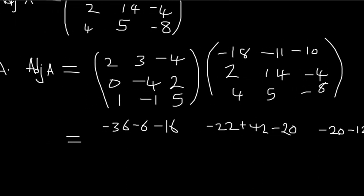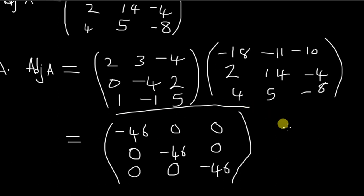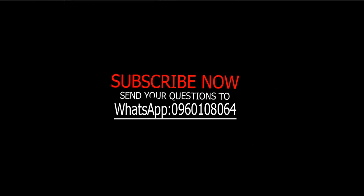After multiplying, you get the final answer matrix. Note that in the earlier expression, that was supposed to be positive 6, not negative 6 — so when you add correctly you get the final answer. Thank you for watching. Please make sure you subscribe to the channel. If you have any questions or contributions, you can send them via the link shown, and I'll be there to respond. See you in the next tutorial video.